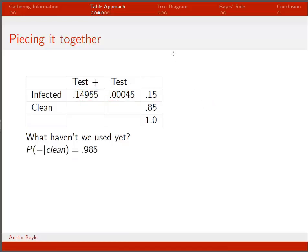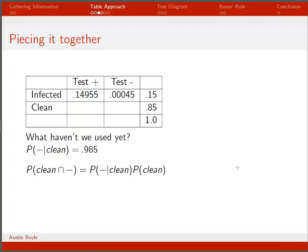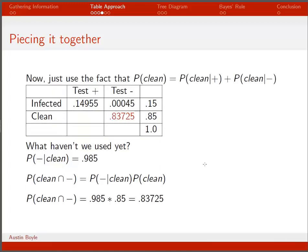Next we need to use the remaining information we haven't used yet: the probability of getting a negative test given that you're clean. We do basically the same thing — find that intersection by multiplying the conditional probability times the marginal probability. Plugging in the numbers we get 0.83725, and we stick it in the table.